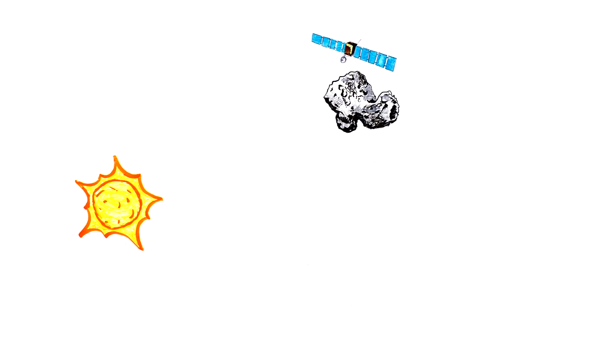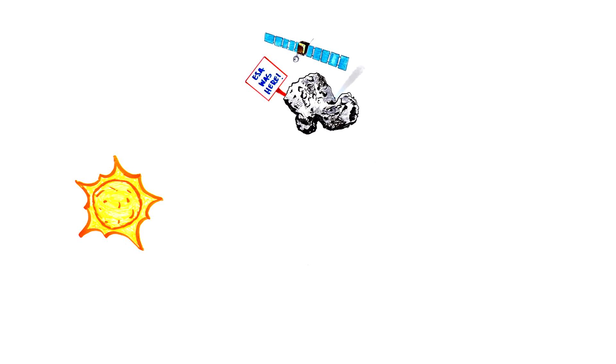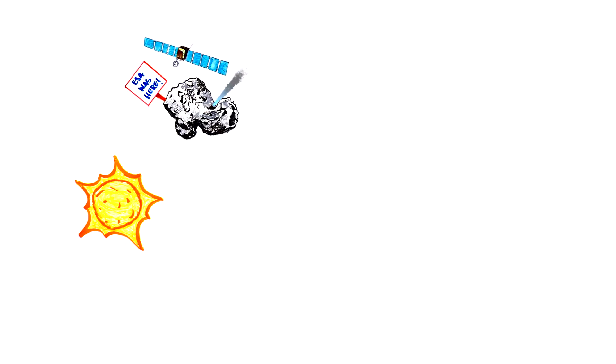In August 2015, Comet Cheryamov-Gerasimenko makes its closest approach to the sun. Rosetta's unprecedented tagging along will send back over years worth of data about the comet, what it's made of, how it works, and how it changes.